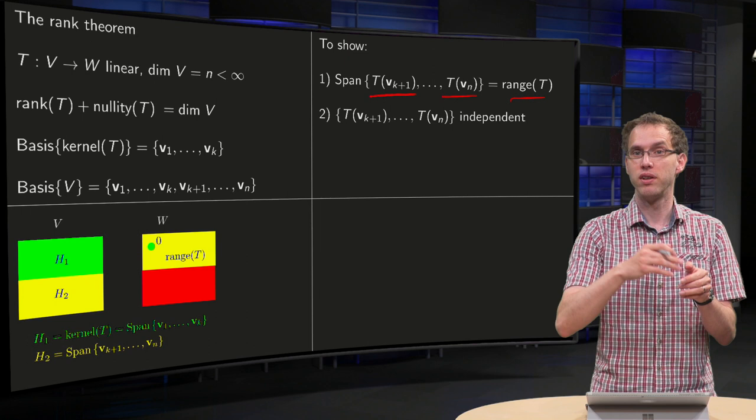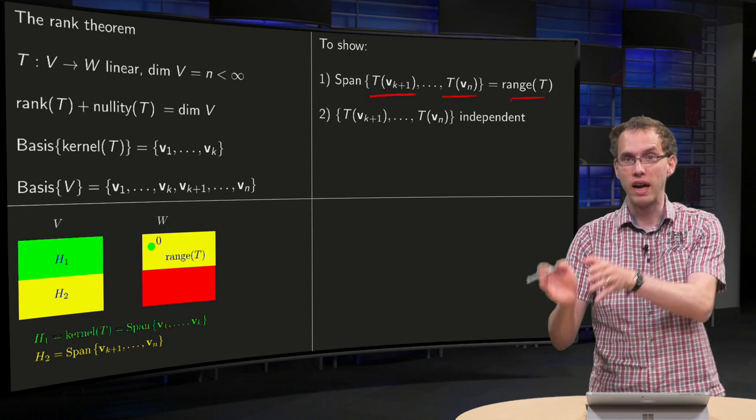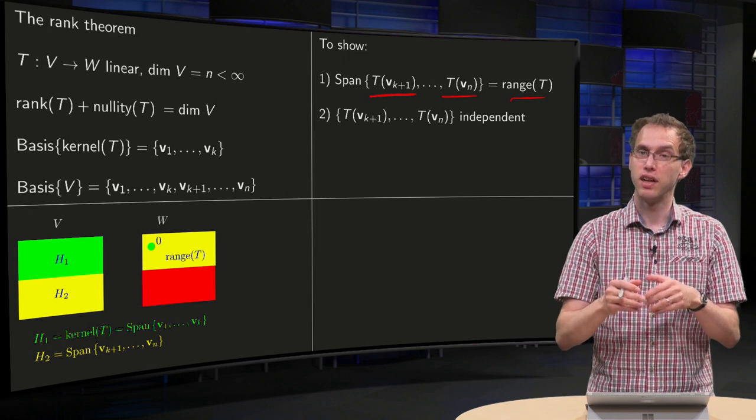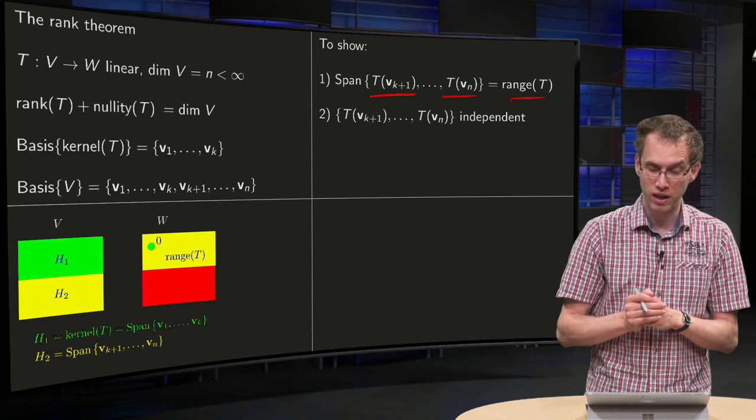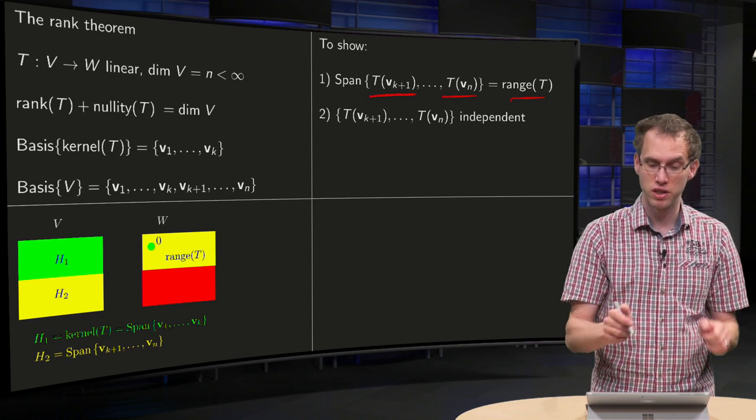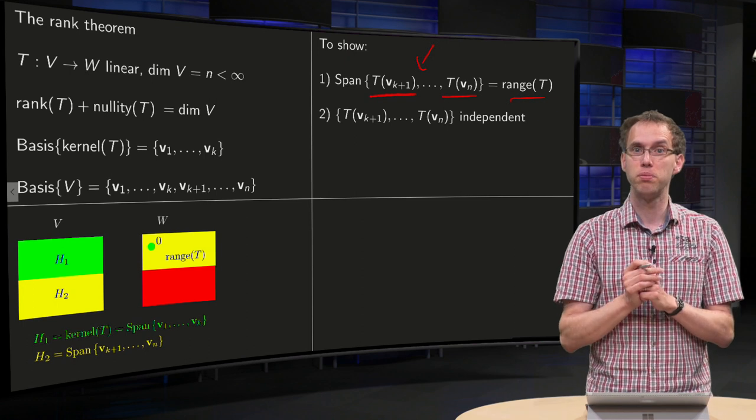That T(vk plus 1) and all the others and the span of that are inside the range, and that if you do that, that you also have all of the range, that the range is also contained in the span of those vectors. That's what you still need to prove.